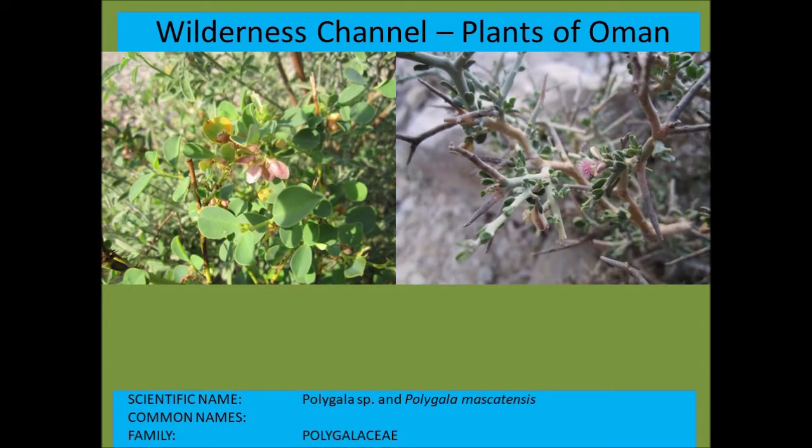Polygala and Polygala muscatensis have these flowers with all the anthers fused basically to form a brush-like structure — characteristic of the flowers of this genus.